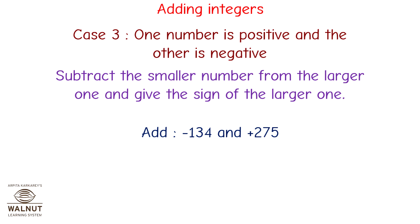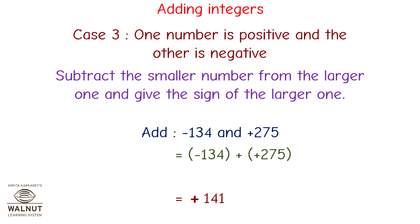Add minus 134 and plus 275. We write the statement: minus 134 plus plus 275. Since one number is negative and one is positive, we subtract the smaller from the larger and give the sign of the larger. The larger number is 275, so the sign will be positive. The answer is 141, so plus 141 is the answer.